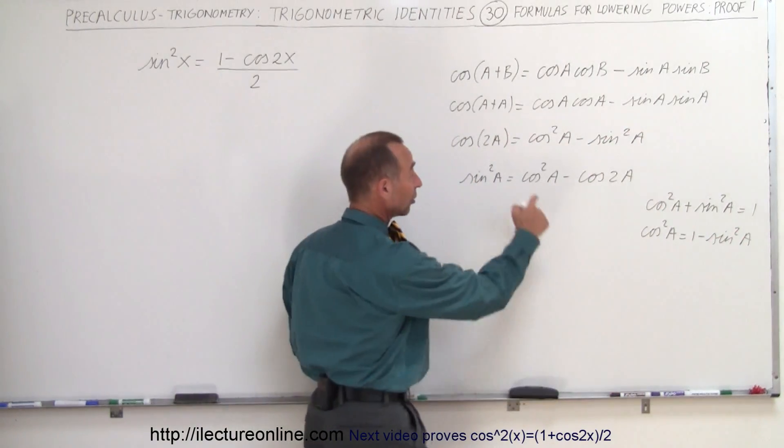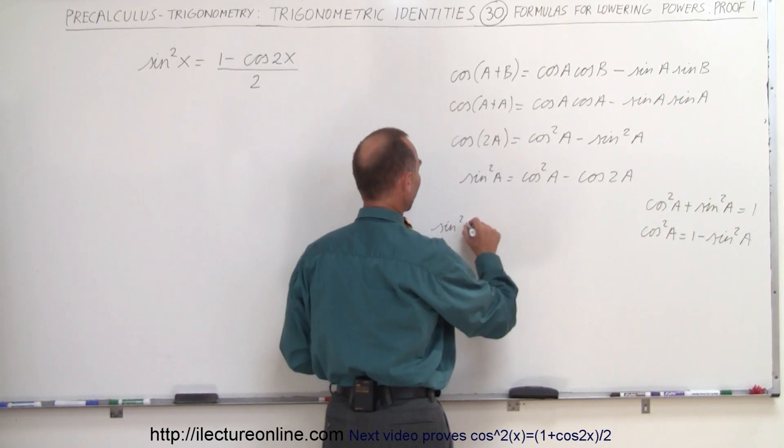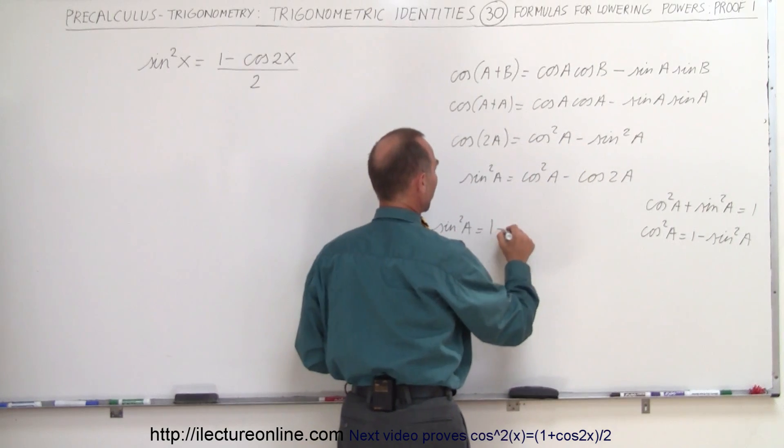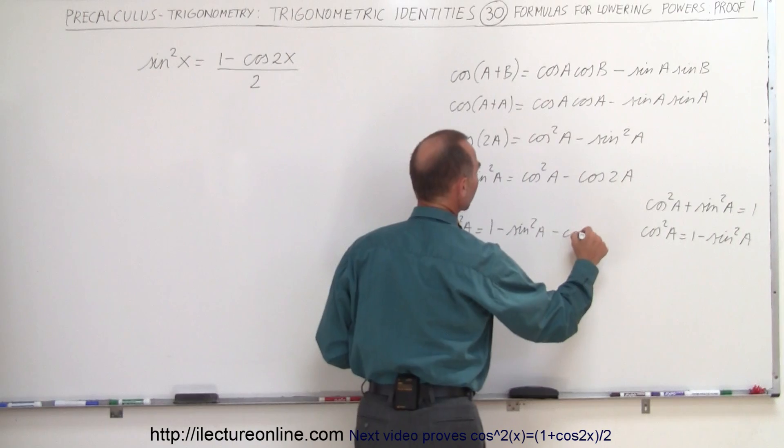So if we make that substitution into this equation, we get the following thing. We get the sine squared of A is equal to—instead of this, we're going to write that—1 minus the sine squared of A, minus the cosine of 2A.